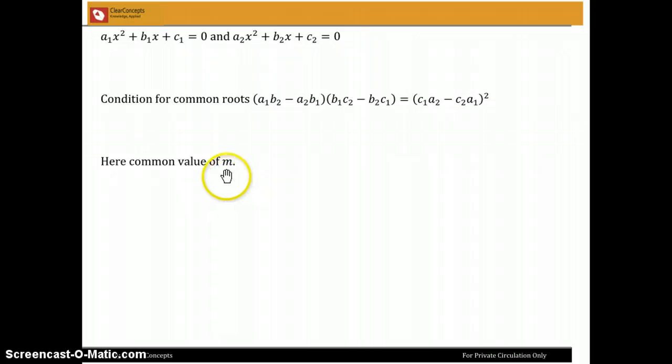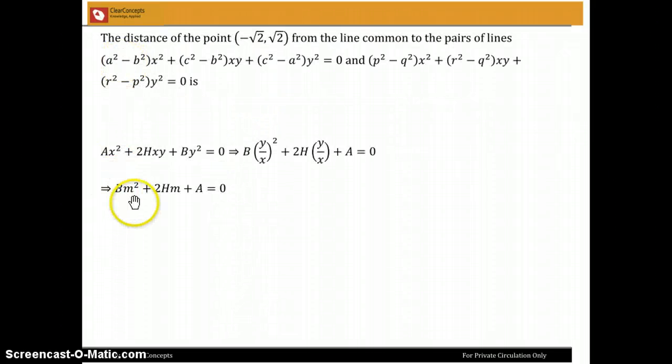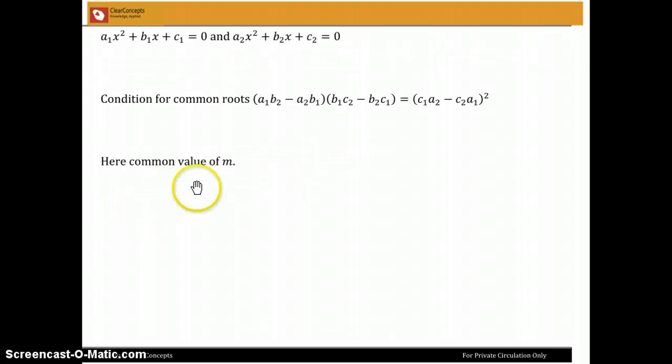And so here we have to find the common root. But remember the root is in terms of M. So we have to find the common value of M. Once we find the common value of M, we know the line that is passing through the origin and we can find the required distance.